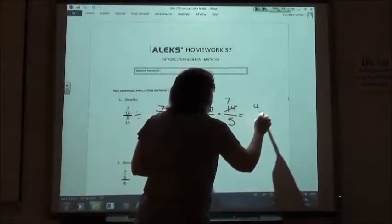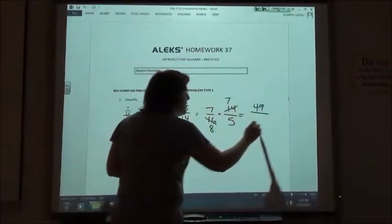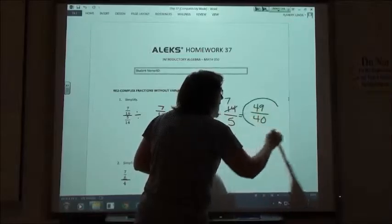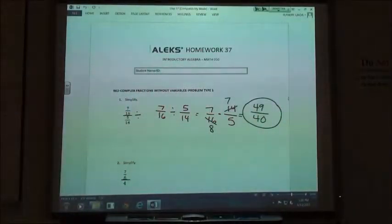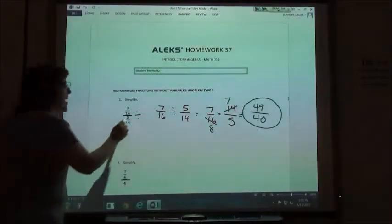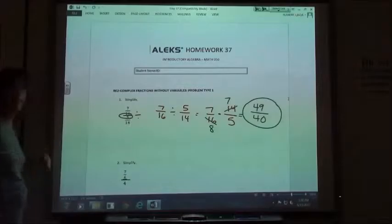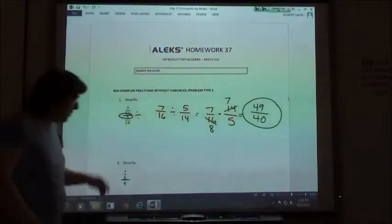7 times 7 is 49. 8 times 5 is 40. They're going to have you leave the improper fraction answer instead of changing it into a mixed number like the calculator would probably do. So that's all they really want you to recognize is that this means I'm going to divide my two fractions.